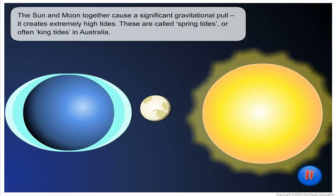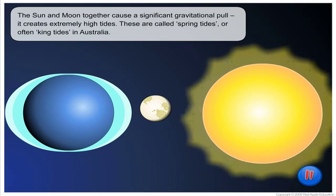The Sun and Moon together cause a significant gravitational pull. It creates extremely high tides. These are called spring tides, or in Australia, king tides.